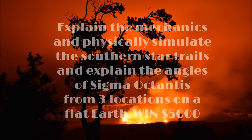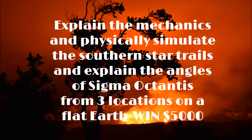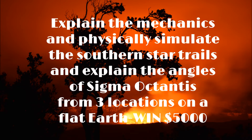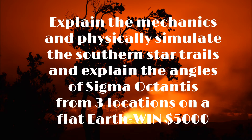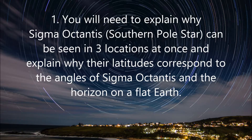Explain the mechanics and physically simulate the southern star trails, and explain the angles of Sigma Octantis from three locations on a flat earth and win $5,000. You would need to explain why Sigma Octantis, or the southern pole star, can be seen in three different locations at once, and explain why their latitudes correspond to the angles of Sigma Octantis on the horizon on a flat earth.